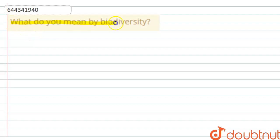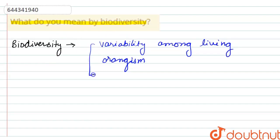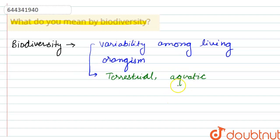The question asks: what do you mean by biodiversity? Biodiversity means variability among living organisms. This variability could be in different organisms, or organisms living in different species such as terrestrial, aquatic — and aquatic could be freshwater or marine water.